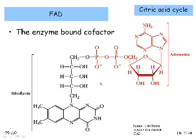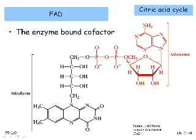FAD stands for flavin adenine dinucleotide. The business end is the riboflavin part — that's why riboflavin is important in your diet. So you're hearing the names of B vitamins you've always thought you ought to have but never knew why. The rest of the molecule is an adenine nucleotide — here's an adenosine, ribose, and a phosphate. Several of these cofactors have an adenine nucleotide as part of them, which is an interesting structural feature.